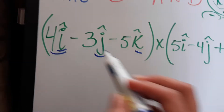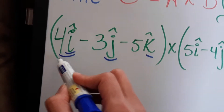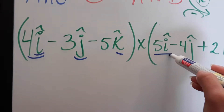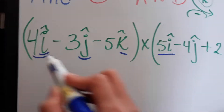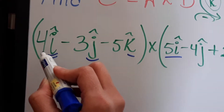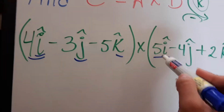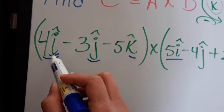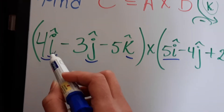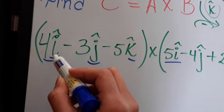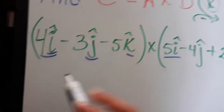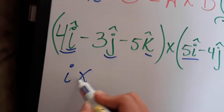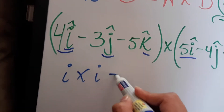So for this one, we have 4i times 5i. It's basically just 4 times 5, and then you look at the unit vector. i cross i is going to equal 0.